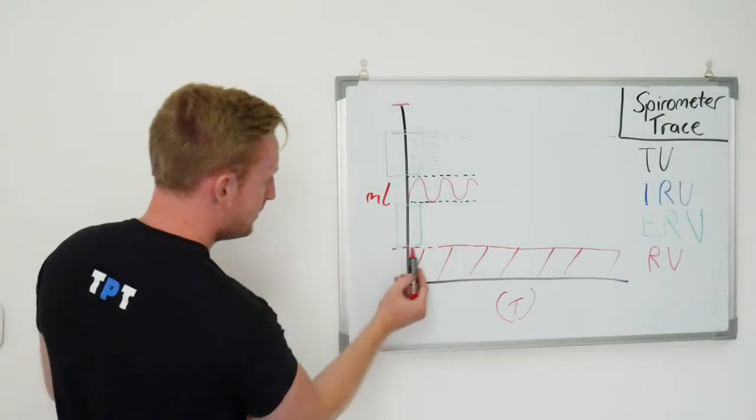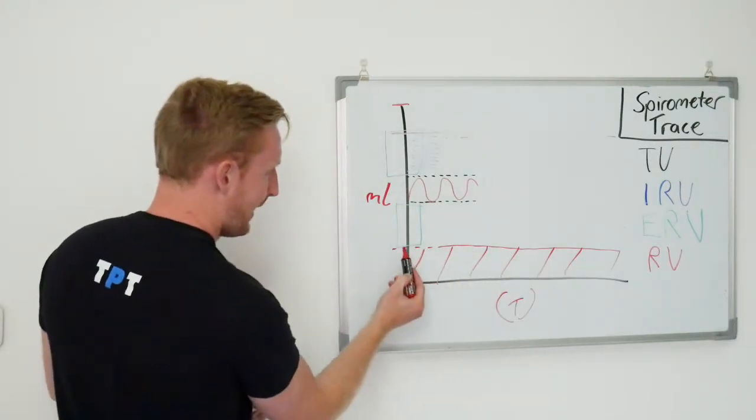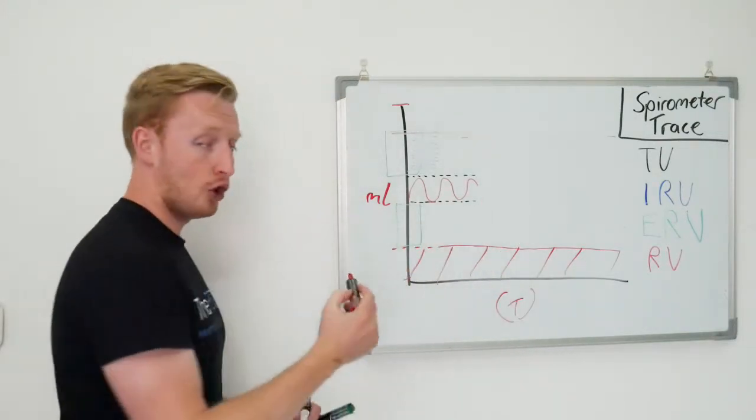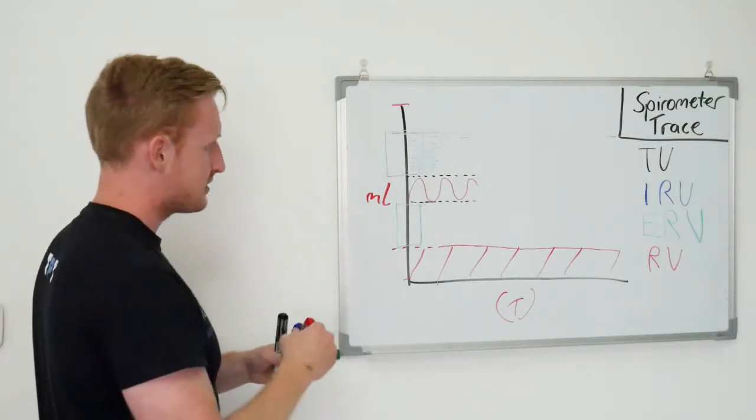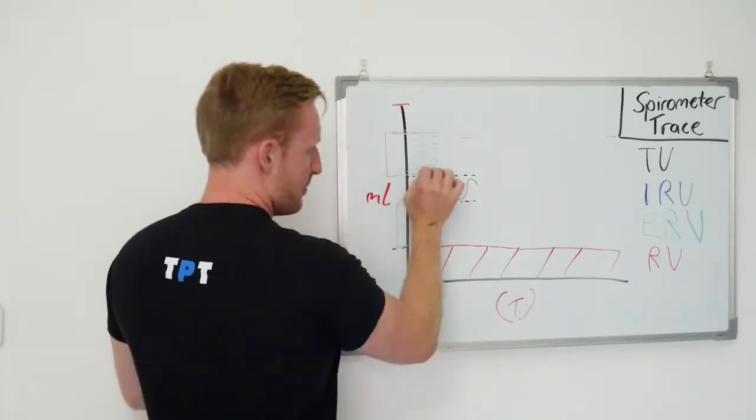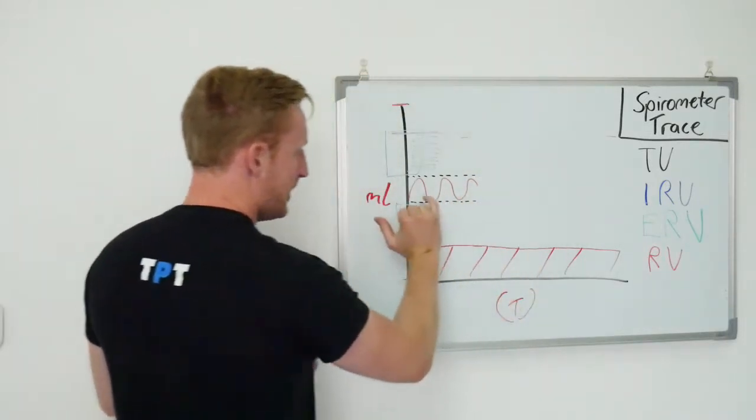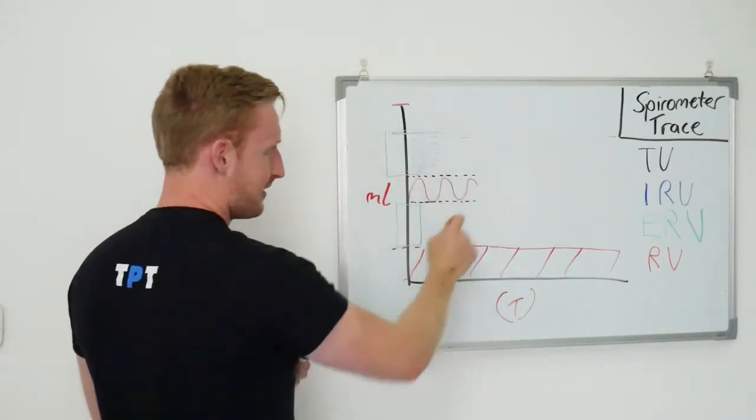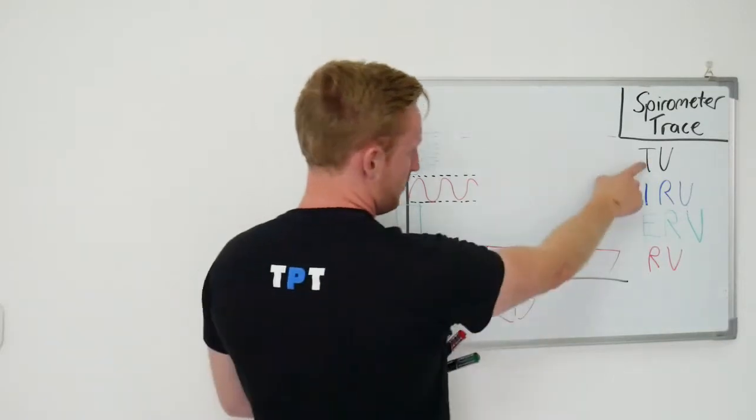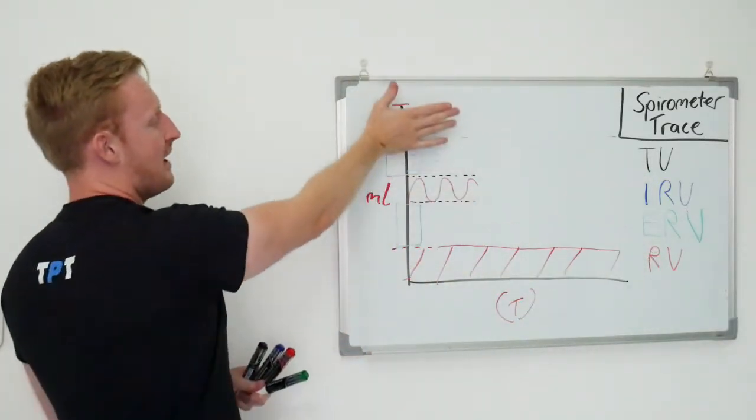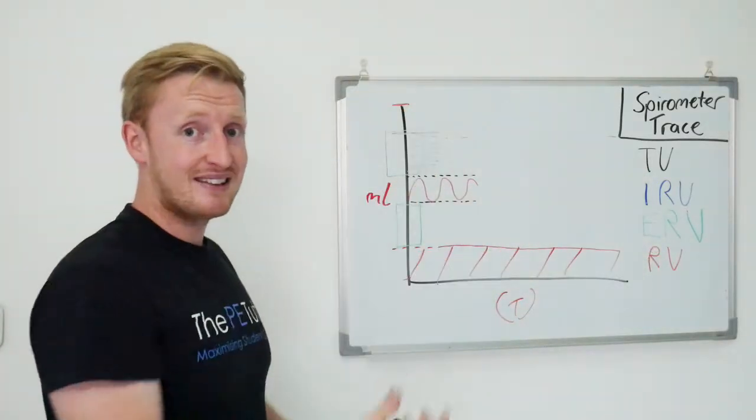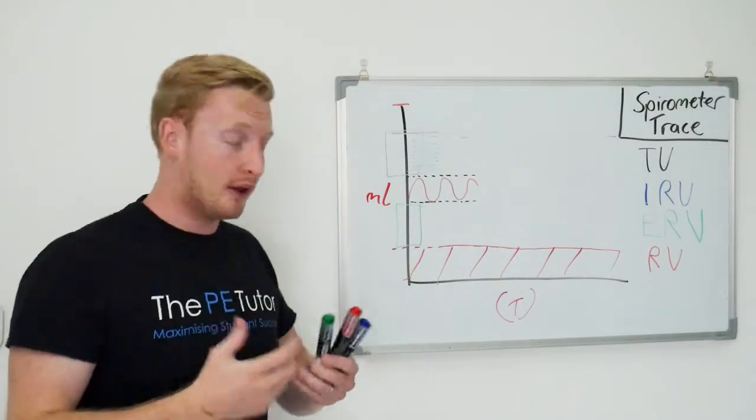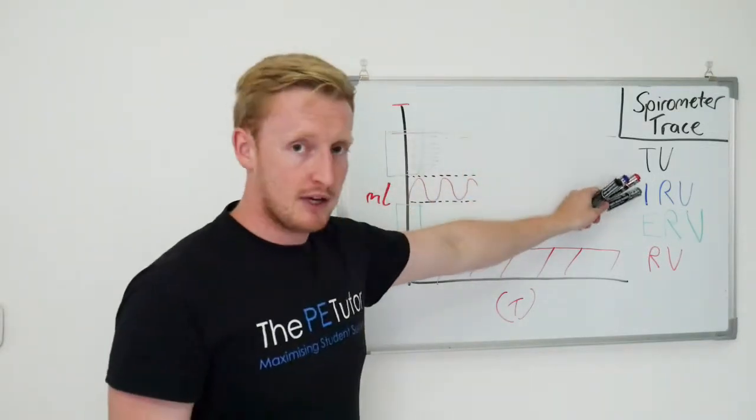So the gap between the top of our residual volume and our normal resting tidal volume exhalation, that's our expiratory reserve volume. The trace in between, so the normal inhale and exhale, that's called our tidal volume. And the space above a normal inhalation that we can still fill up with air, following a normal inhalation, is our inspiratory reserve volume.